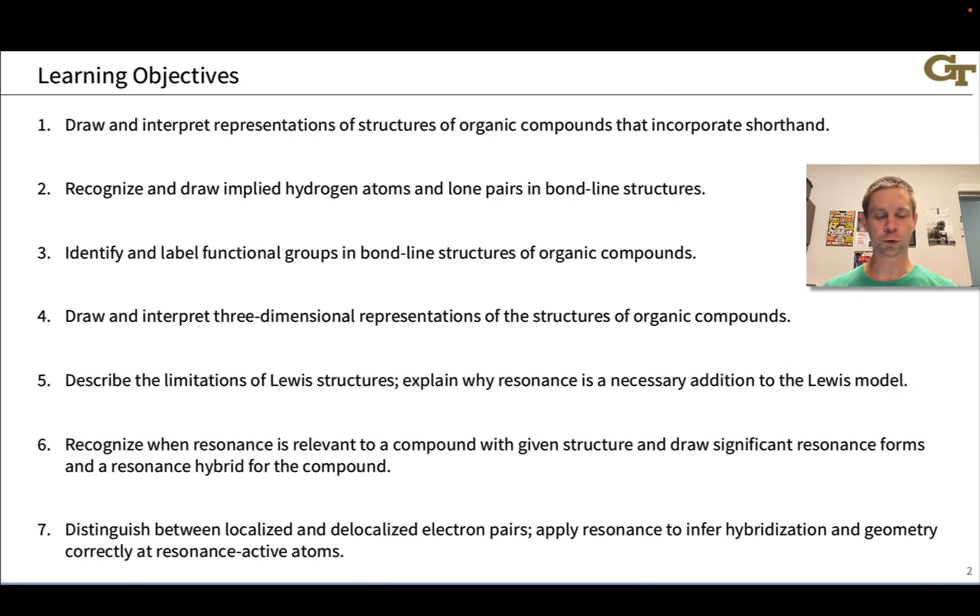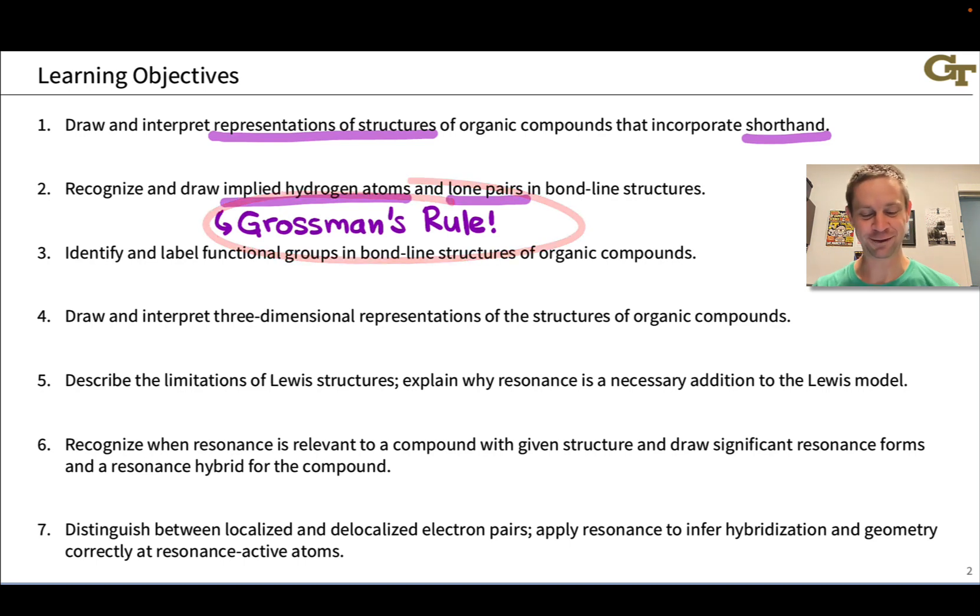And so in this unit we're going to draw and interpret representations of structures of organic compounds that incorporate these shorthand conventions. We're going to learn how to interpret the shorthand to expand implied hydrogen atoms and lone pairs. And this idea that we should expand implied hydrogens around reactive centers was taught to me years ago by Bob Grossman at the University of Kentucky and he rather narcissistically called it Grossman's Rule.